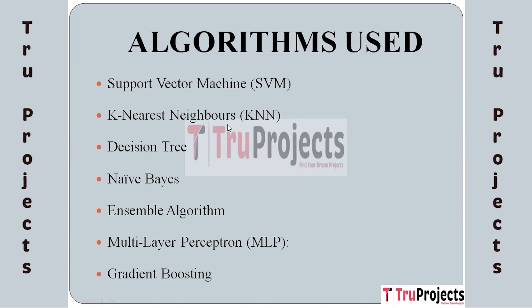The next algorithm is K-Nearest Neighbors (KNN). KNN's simplicity and instance-based learning enable proximity-based classification. It aids in identifying patients with similar vitals, enhancing condition prediction accuracy through collective neighborhood insights.